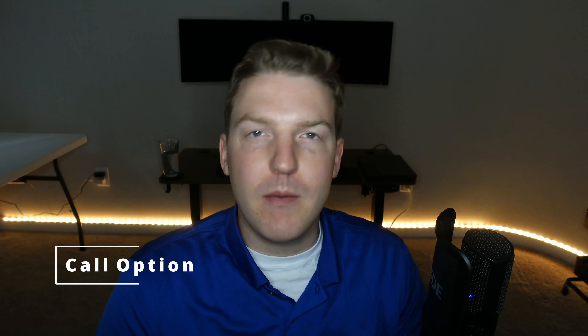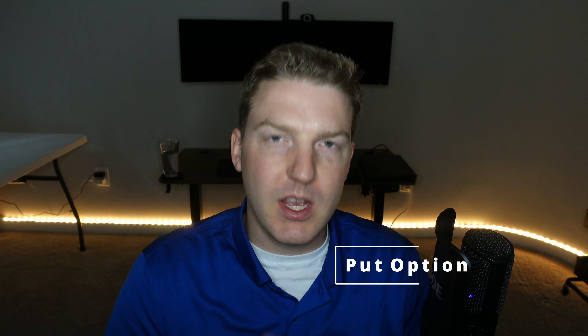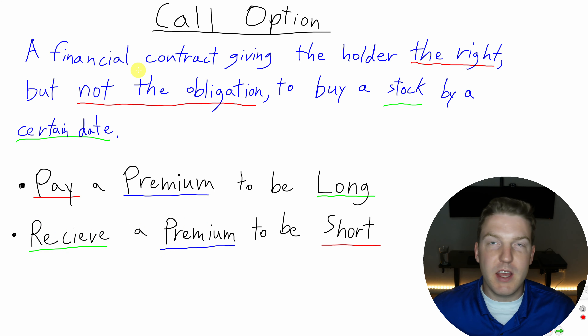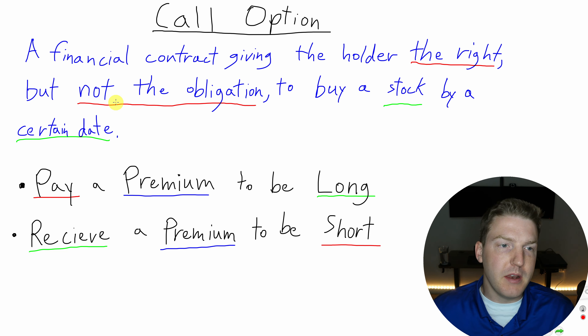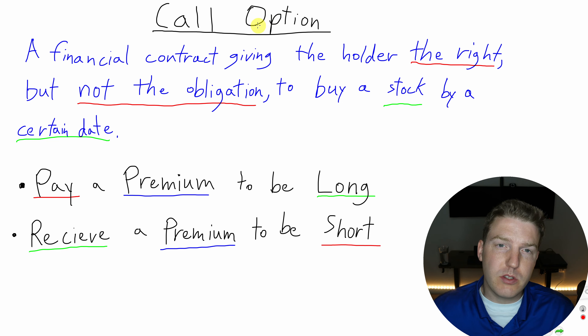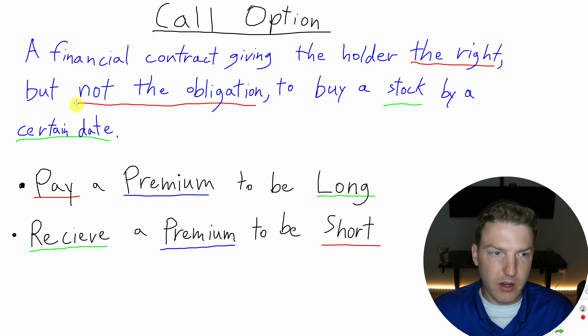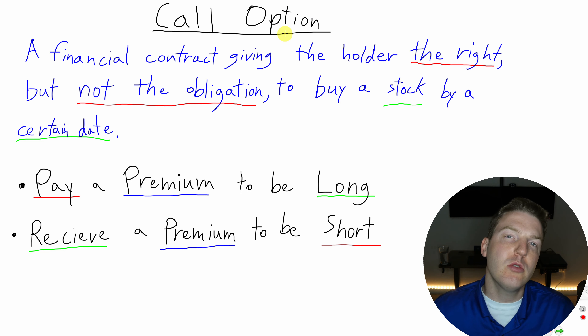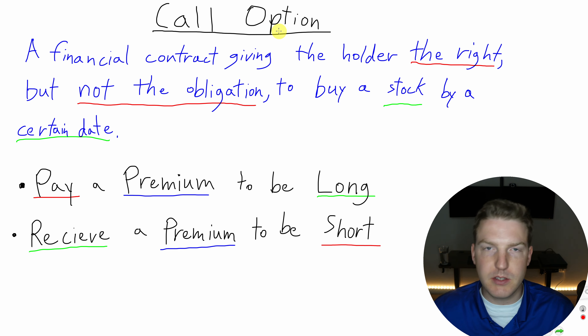In this video we're going to be going over the basics of call option and put option payoff diagrams. A call option is a financial contract giving the holder the right but not the obligation to buy a stock by a certain date. It's called an option because we have the option to buy the stock — we're not obligated, but we have the right to exercise that option if we choose and if the conditions make sense.